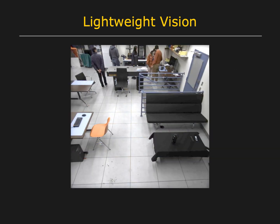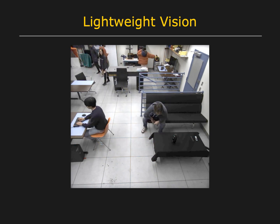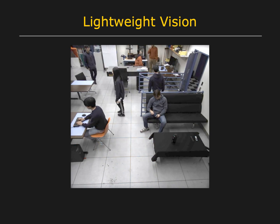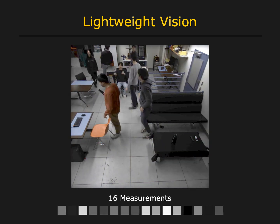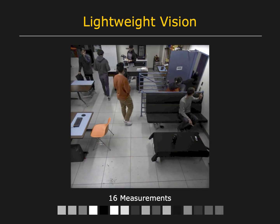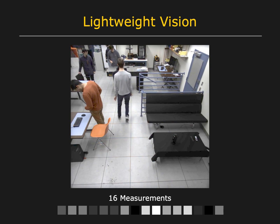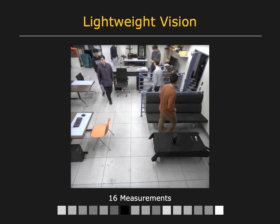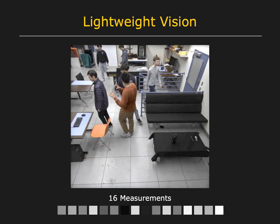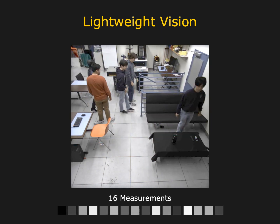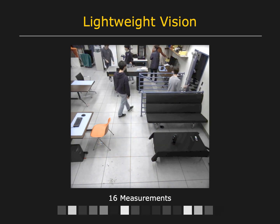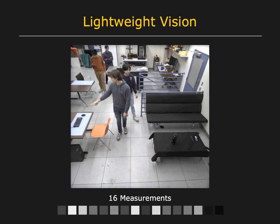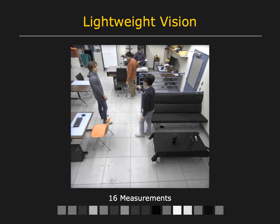Consider the task of counting the number of people in this workspace. It turns out that we can perform this task with high accuracy using just 16 measurements. There are two major advantages to capturing such a small number of measurements. First, it ensures that individuals in the scene cannot be identified and hence privacy is preserved. And second, a camera that captures so few measurements can be made fully self-powered by harvesting energy just from the light falling on it.